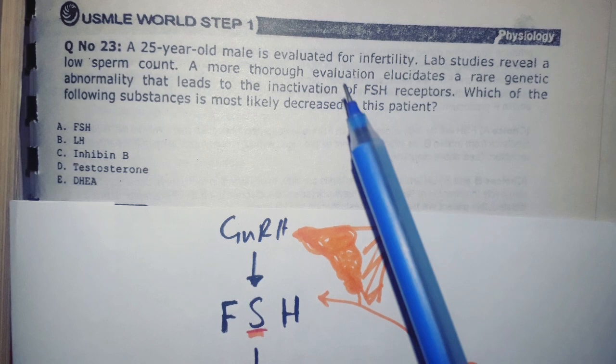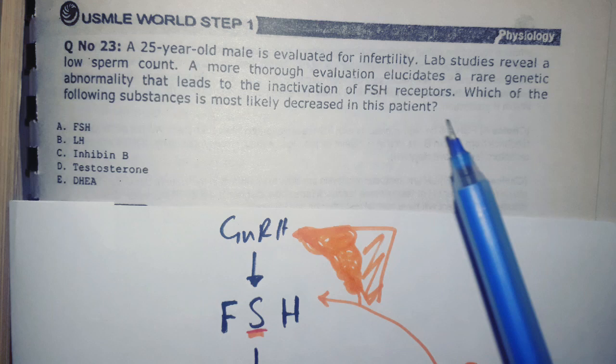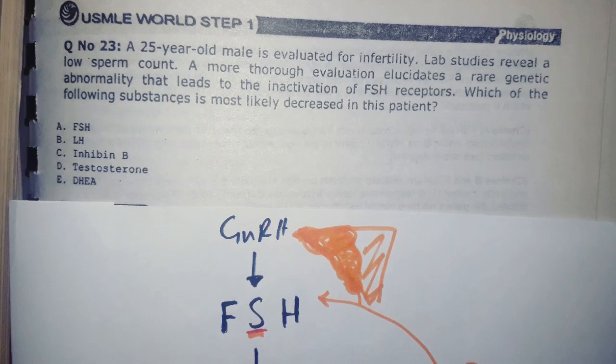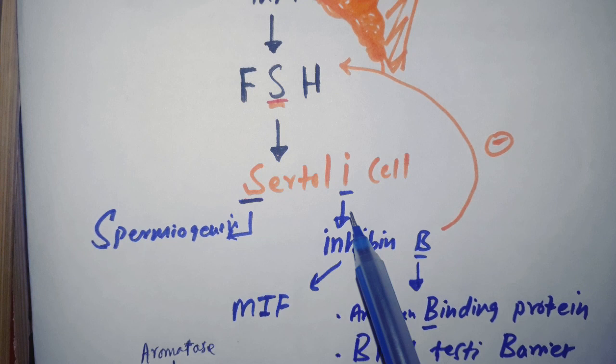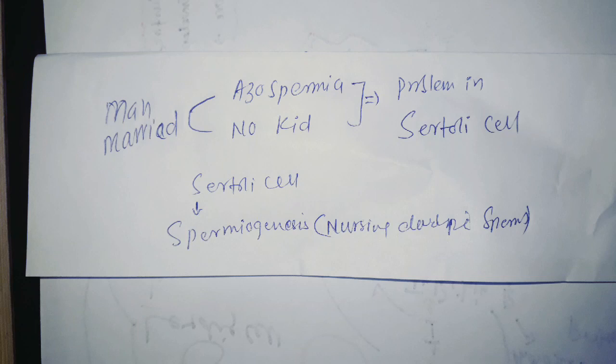As we know, FSH acts on Sertoli cells, and at the end of Sertoli there is word I which means it secretes inhibin B. So the answer will be inhibin B. If the receptor of FSH is not working, then Sertoli cells are not going to secrete inhibin B.